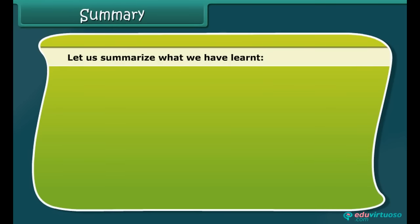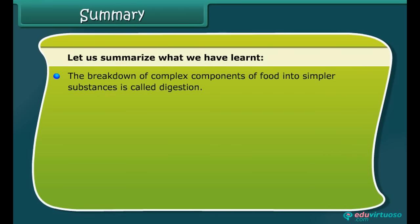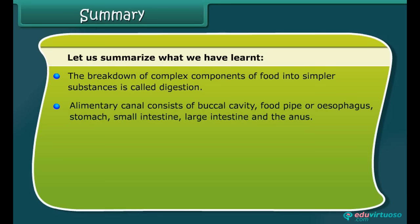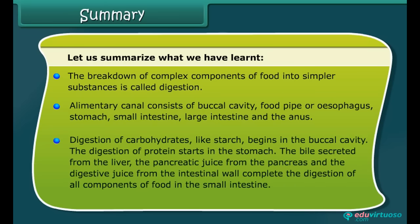Let us summarize what we have learned. The breakdown of complex components of food into simpler substances is called digestion. The alimentary canal consists of the buccal cavity, food pipe or esophagus, stomach, small intestine, large intestine, and anus. Digestion of carbohydrates like starch begins in the buccal cavity. Digestion of protein starts in the stomach. Bile from the liver, pancreatic juice, and intestinal juice complete digestion of all food components in the small intestine.